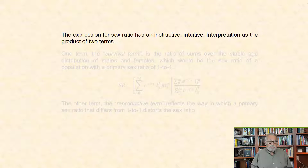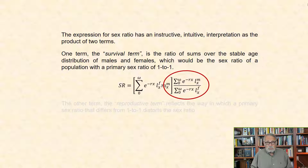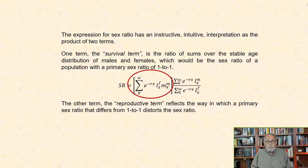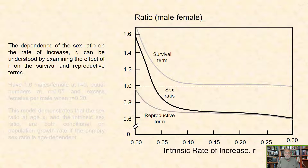The expression for sex ratio has an instructive, intuitive interpretation as the product of two terms. One term, the survival term, is the ratio of sums over the stable age distribution of males and females, which would be the sex ratio of a population with a primary sex ratio of 1 to 1. The other term, the reproductive term, reflects the way in which a primary sex ratio that differs from 1 to 1 distorts the sex ratio. The dependence of the sex ratio on the rate of increase, r, can be understood by examining the effect of r on the survival and reproductive terms.